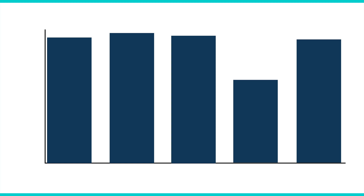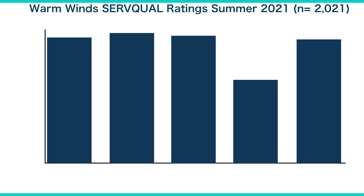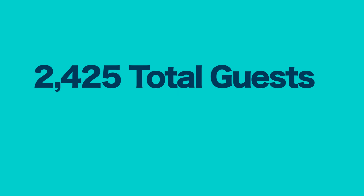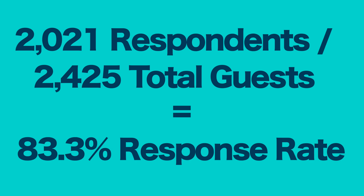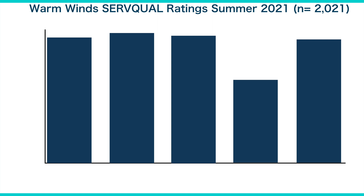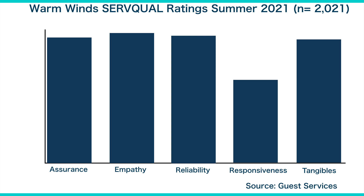Initially, you prepared a bar chart that shows the guest ratings for each dimension. On the top of the chart is the title "Warm Winds Servqual Ratings Summer 2021." In parenthesis, you also included the number of guests who completed the survey so that the general manager can assess how well this group represents the total number of people who stayed at Warm Winds. With a total of 2,425 guests during the summer season, you have a response rate of 83.3%. At the bottom of the chart, the source of the data is guest services. You also listed the five dimensions of service quality along the x-axis and the four-point Likert scale that the guests used along the y-axis.